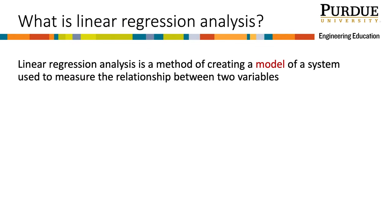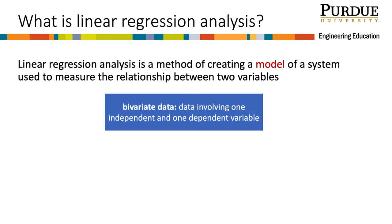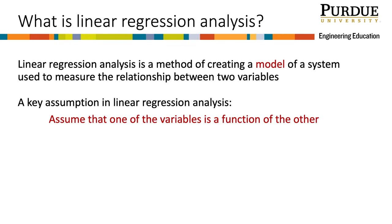So what is linear regression? Regression is used to model a dependent variable from one or more independent variables. In this class, we will focus on bivariate data, or data involving one independent and one dependent variable. These variables can be related in various ways. There is a key assumption we make when doing linear regression analysis, and that is that we assume that one of the variables is a function of the other variable.